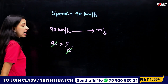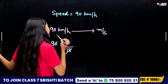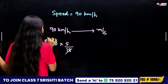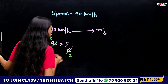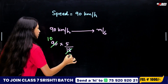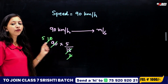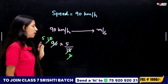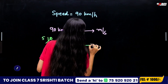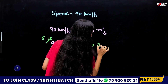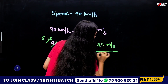We can cancel: 90 into 5 by 18 — cancel 2, cancel 9, cancel 10, cancel 2, pick 5. If we consider 5 by 5, we get 25. So we get 25 meters per second.